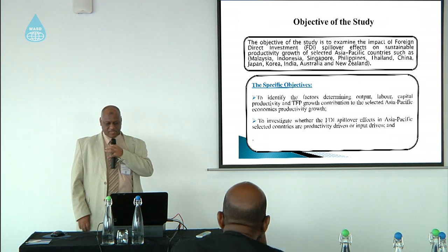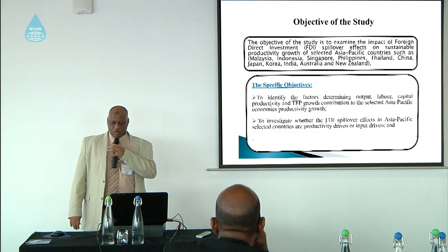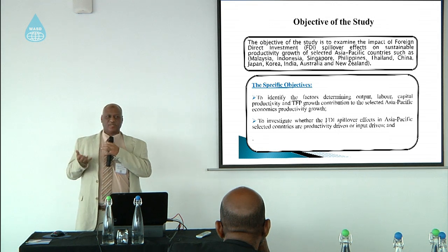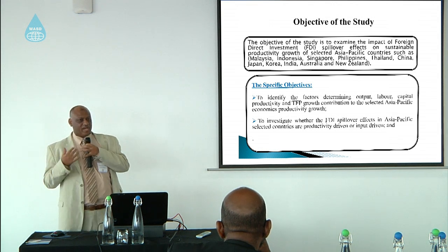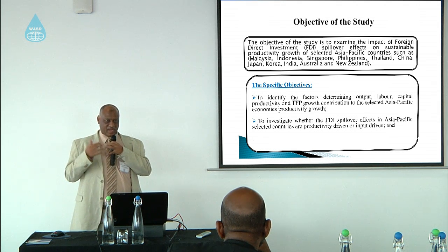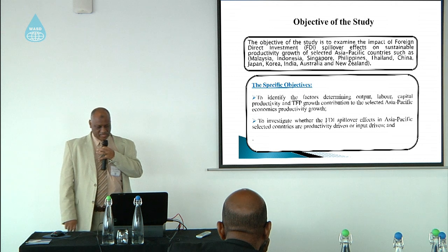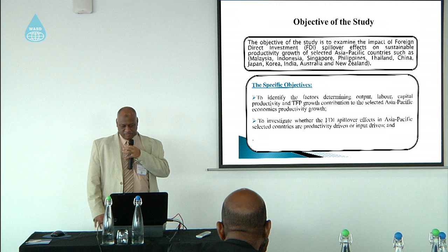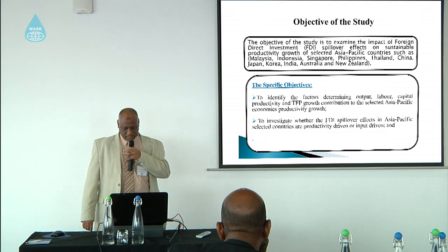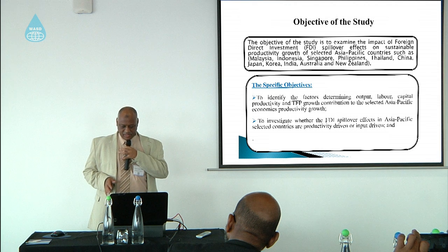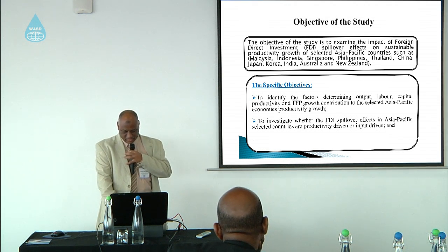The objective of this study is to examine the impact of foreign direct investment and its spillover effect — how we are going to achieve sustainable development in a positive way. Why did the Soviet Union collapse? Because it had huge resources and built big nations, but collapsed due to lack of technological progress in the 1990s. The specific objective is to identify the factors determining output, labor, capital productivity, and total factor productivity contribution in selected Asia-Pacific countries, and to investigate whether the spillover effect is input-driven or productivity-driven.